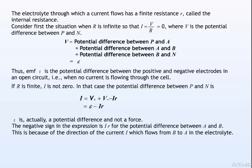Thus, EMF epsilon is the potential difference between the positive and negative electrodes in an open circuit, that is, when no current is flowing through the cell.